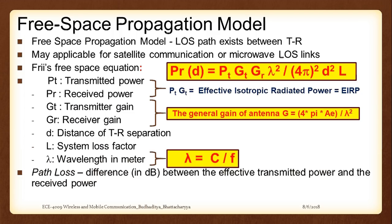The important formula to keep is: Pr = PT·GT·GR·λ² / ((4π)²·d²·L). L is a system loss factor — it is not an environmental loss but accounts for losses in filters or electronic measurement gadgets. In most cases and in most numerical problems, L is considered to be 1, meaning the measurement device is calibrated and not faulty.